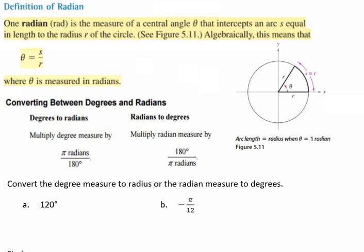In this video, we're going to be talking about the definition of a radian, converting between degrees and radians, finding the complement, supplement, and the coterminal angle of a radian. So let's begin with the definition of a radian. One radian, or rad, is the measure of a central angle theta that intercepts an arc S equal in length to the radius R of the circle, as diagrammed in our picture here. Algebraically, this means that theta equals S divided by R, where R is measured in radians.